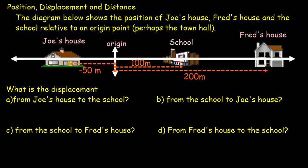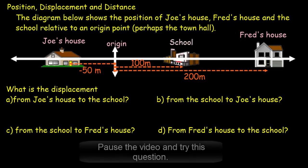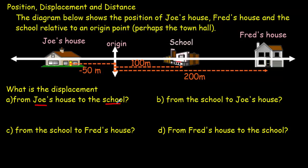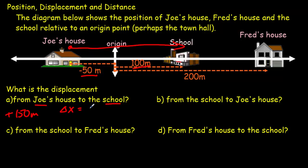In this one-dimensional example, we determine certain displacements. From Joe's house to the school: that's 50 plus 100, which is 150 meters, and I put a plus sign to indicate to the right. More mathematically, displacement delta x equals final position minus initial position: plus 100 minus negative 50 gives us plus 150 meters. From the school to Joe's house: 150 meters but to the left, so negative 150 meters.